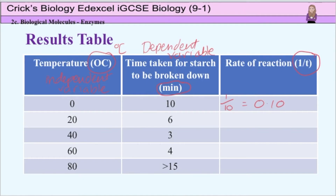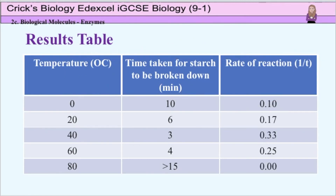Pause the lesson and have a go at completing the rest of the rates of reaction. Think about the last one — if the starch was not broken down at all, what do you think the rate was? Here we have the final rates of reaction: at 20 degrees C, 1 divided by 6 gives 0.17; at 40 degrees C, 1 divided by 3 gives 0.33; at 60 degrees C, 1 divided by 4 gives 0.25; and at 80 degrees C, no starch was broken down, therefore there was no rate of reaction and we record 0.00.